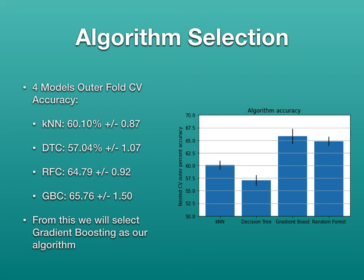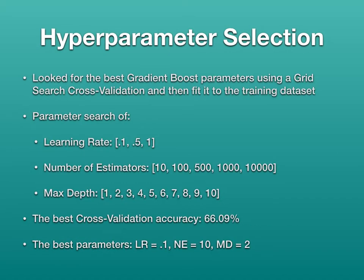For algorithm selection, I chose gradient boosting because it had the best cross-validation accuracy. Even though the variance was a little high, I still thought this was the best algorithm to go with. I then selected hyperparameters using grid search cross-validation, searching over learning rate, number of estimators, and max depth. The best cross-validation accuracy was 66.09%, with best parameters of a learning rate of 0.1, number of estimators at ten, and max depth of two.